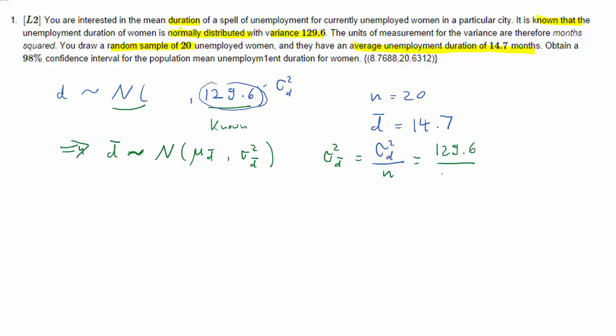We have both these values, so the variance of d bar is equal to 6.48, and that means that the standard deviation of d bar is the square root of that, square root of 6.48, and that's 2.5456.